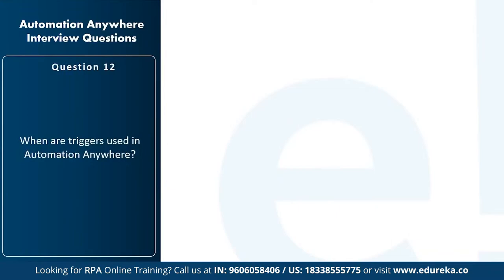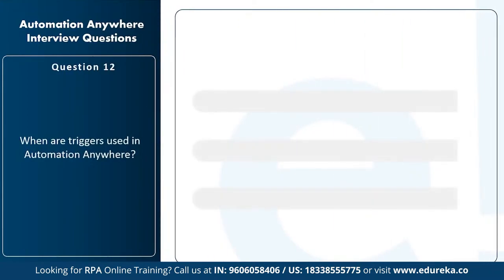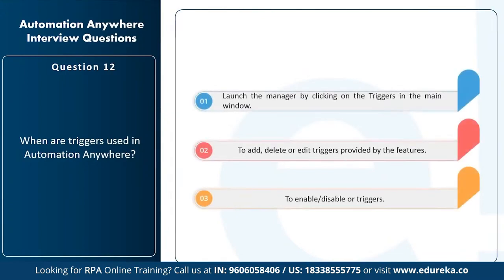The next question is: when are triggers used in Automation Anywhere? Triggers are used to launch the trigger manager by clicking on triggers in the main window, to add, delete, or edit triggers provided by the features, and to enable or disable the triggers.